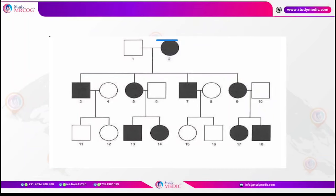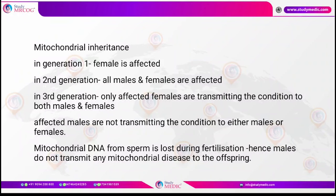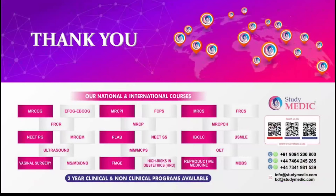In mitochondrial inheritance, an affected female in the first generation transmits the disease to all males and females in the second generation. In the third generation, only affected females transmit the condition to both males and females — affected males do not transmit to either males or females. This is because mitochondrial DNA from sperm is lost during fertilization, so males do not transmit any mitochondrial disease to offspring. An example is MELAS syndrome.